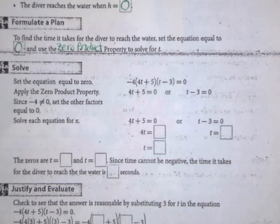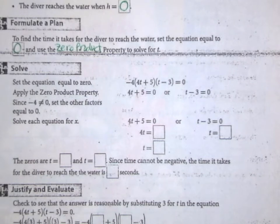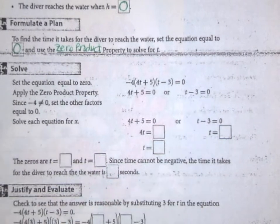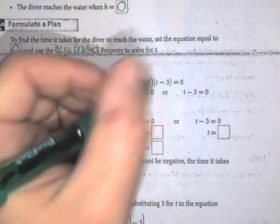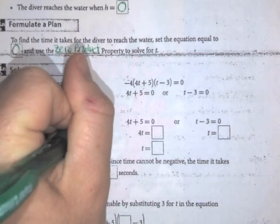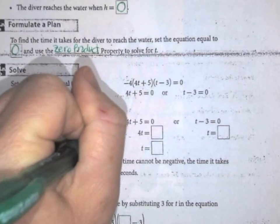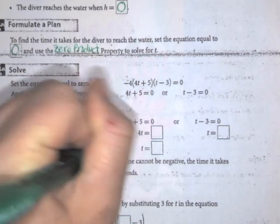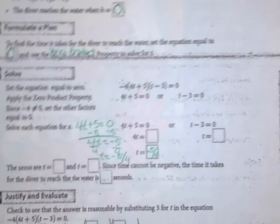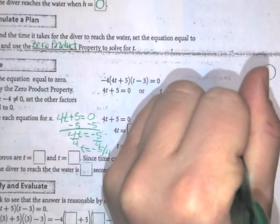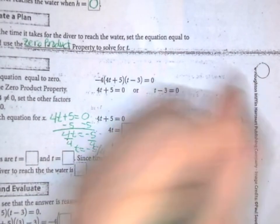Since -4 cannot be zero, we don't need to use that. So 4t + 5 or t - 3. We subtract out the five. I'm going to do my work over here. So 4t + 5 = 0, minus 5, 4t = -5, divide by 4, t = -5/4. Okay, this one's a little bit simpler here. So t - 3 = 0, add 3, t = 3.